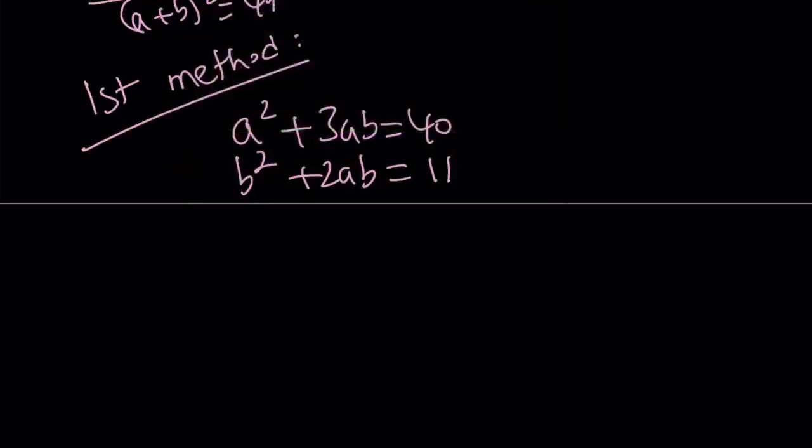This is a homogeneous system, which means when you replace b with a multiple of a, it's going to be an equation in a different variable. You can also look at it this way: this is quadratic, this is quadratic, so it's homogeneous. Let's go ahead and replace b with k times a.